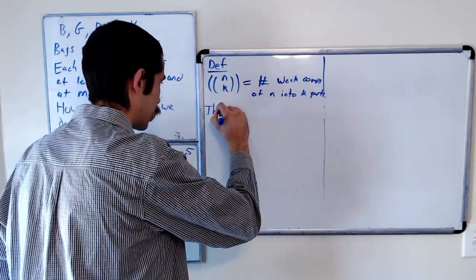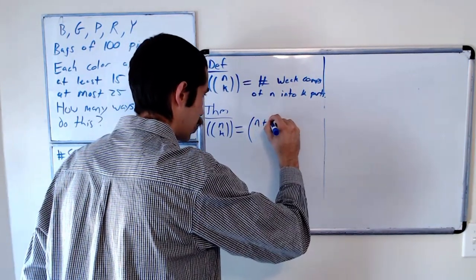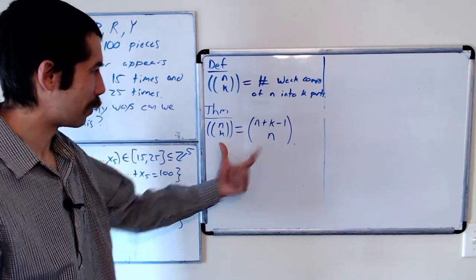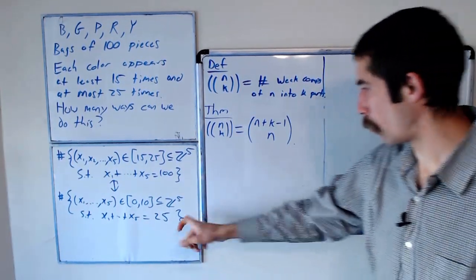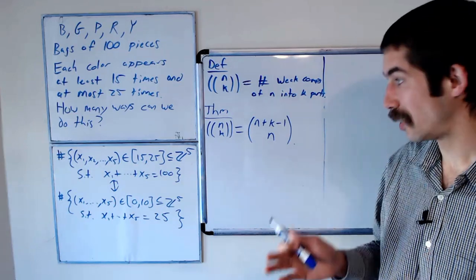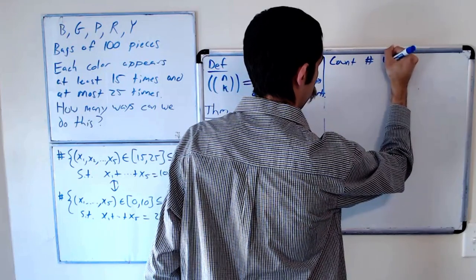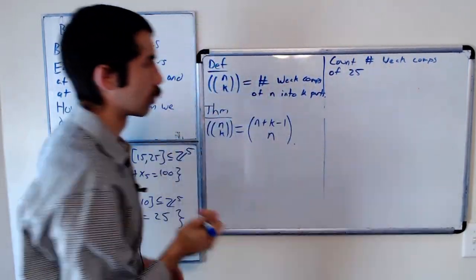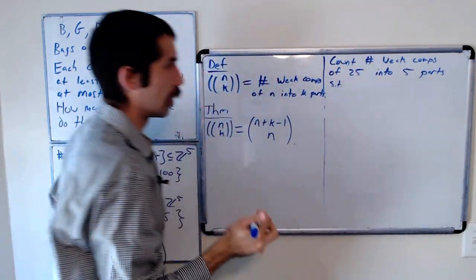And a basic result in combinatorics is the following theorem: n multi-choose k is equal to n plus k minus 1, choose n. Okay, so this is going to be the big result we use. The number of weak compositions of n into k parts is equal to this. And what are we trying to count? We're trying to count weak compositions of 25 into five parts such that no part is greater than 10.